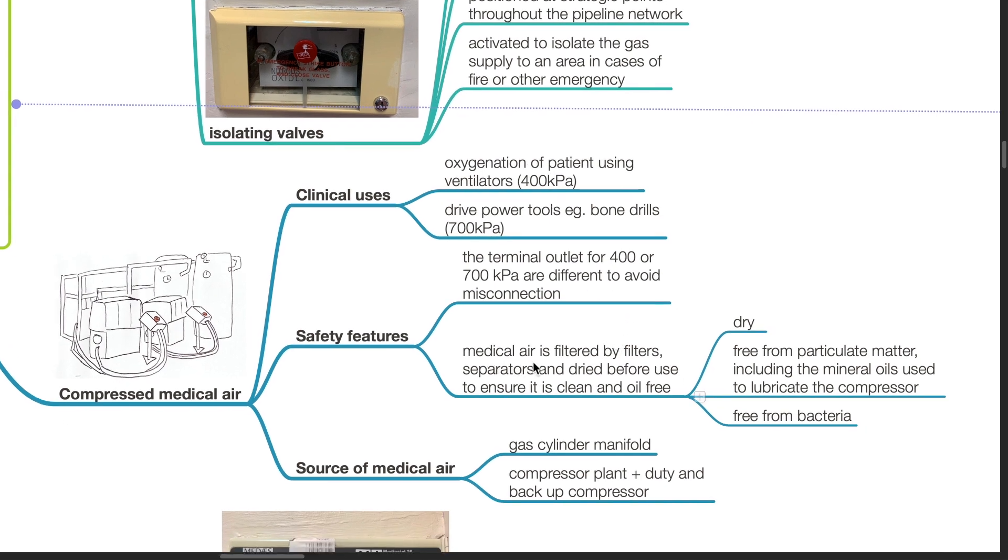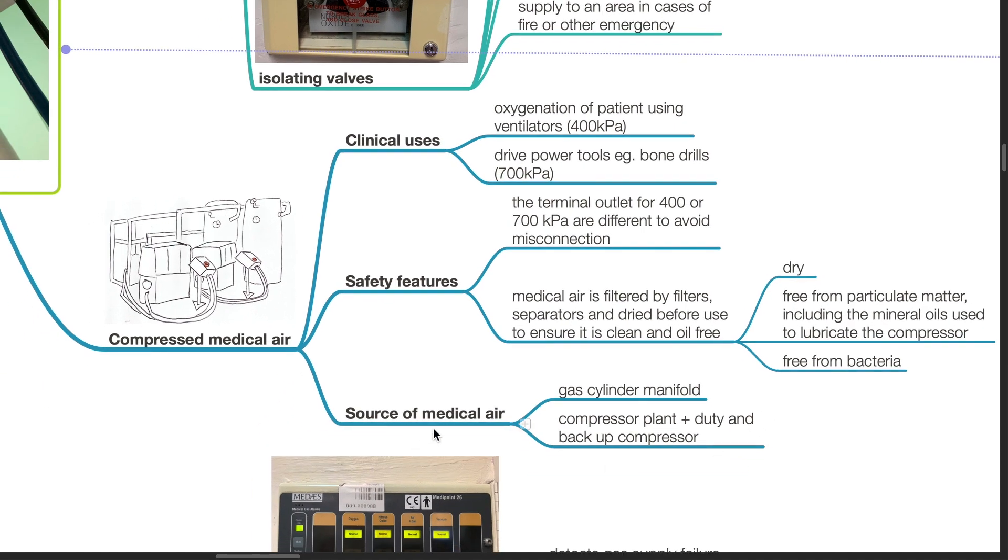Medical air is filtered by filters, separators, and dried before use to ensure it is clean and oil free. Medical air should be dry, free from particulate matter which includes mineral oils used to lubricate the compressor, and free from bacteria. Source of medical air: gas cylinder manifold or compressor plant plus duty and backup compressor.